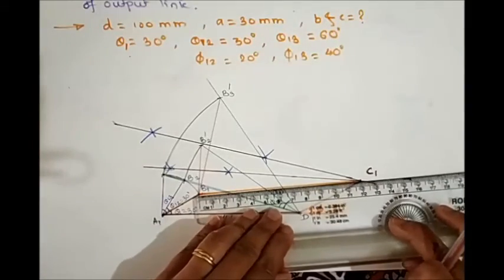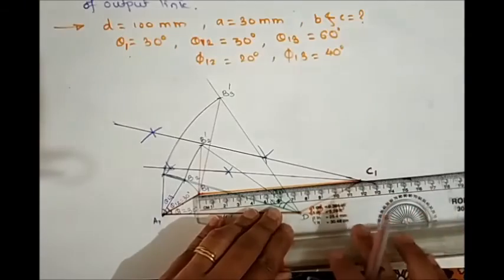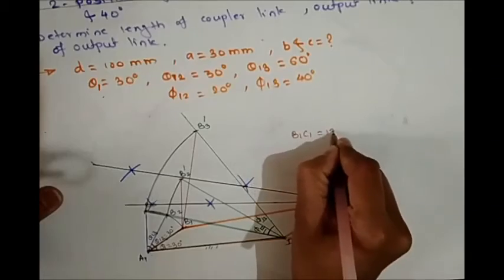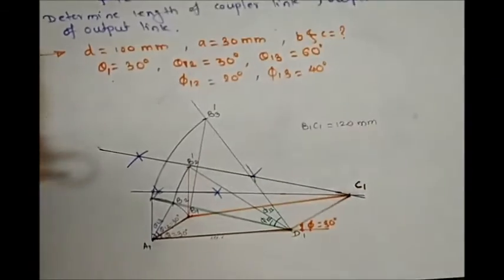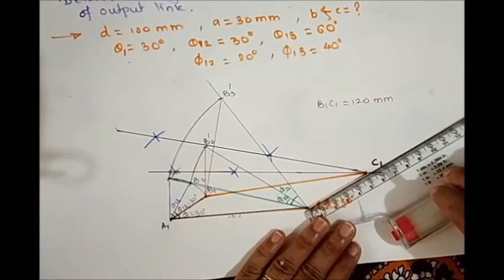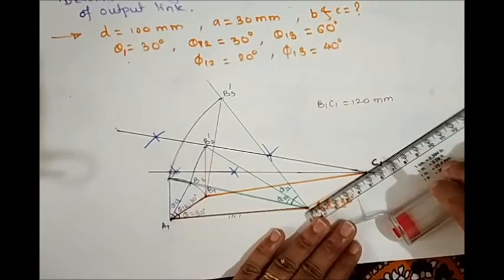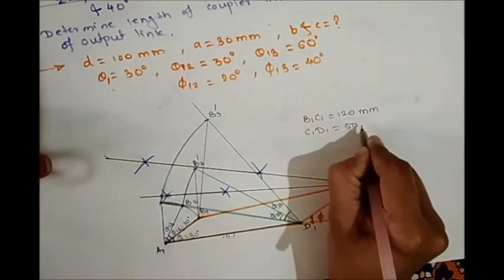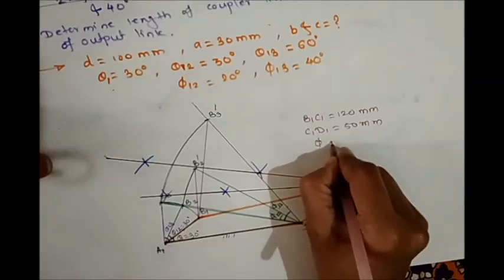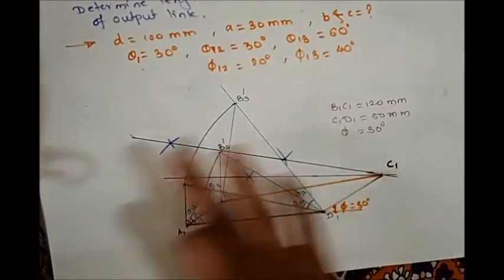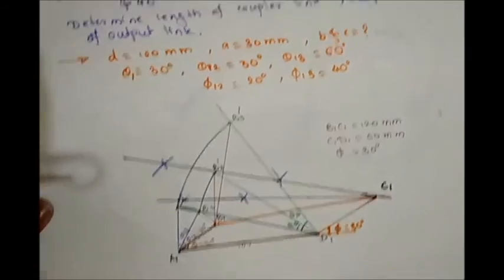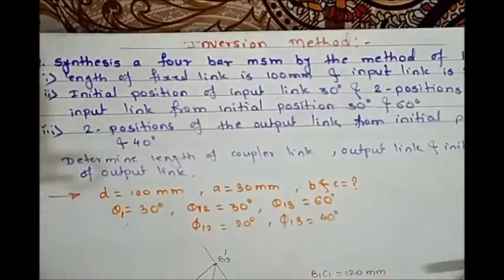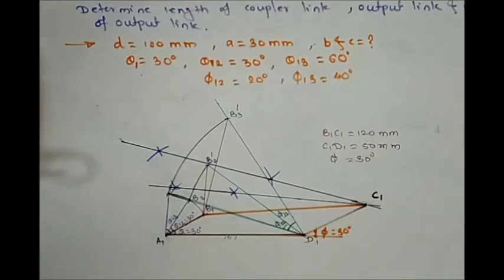Now measure B1 C1, which equals 120 mm, and output link D1 C1 equals 50 mm. So C1 D1 is equal to 50 mm, and phi equals 30 degrees. In this way we complete the four-bar mechanism for three positions using the inversion method. I hope you get the concept — thank you for watching.